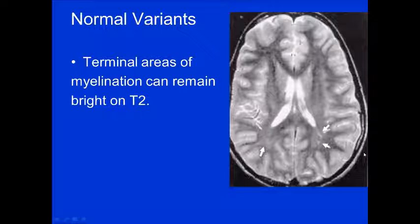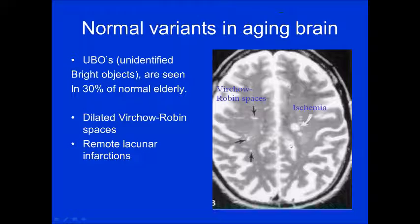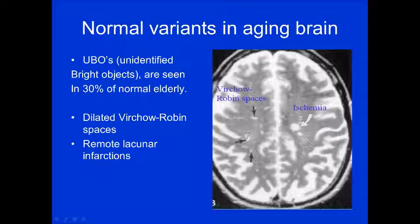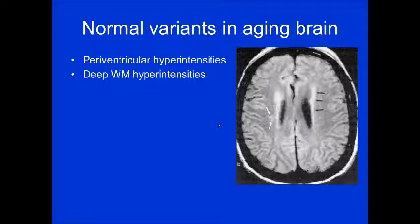Normal variants can make evaluation for MS difficult. Terminal areas of myelination can remain bright on T2, seen more in children. In the aging brain, unidentified bright objects are seen in 30% of normal elderly — though honestly more frequently than that in practice. You may see chronic ischemic areas alongside dilated Virchow-Robin spaces, which are also bright. Normal periventricular hyperintensities of an aging brain and white matter hyperintensities from chronic ischemia can mimic MS.